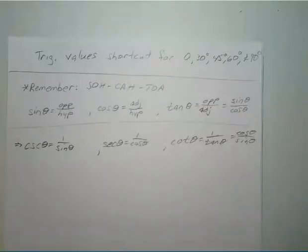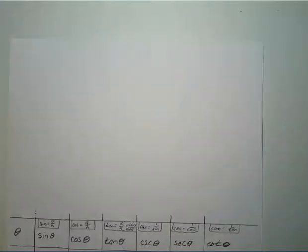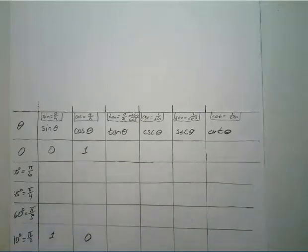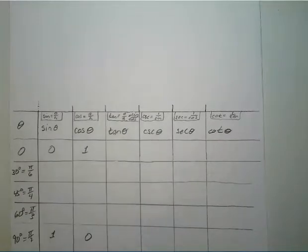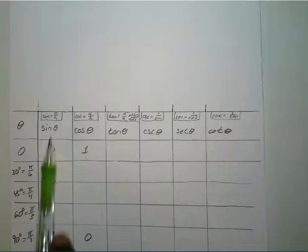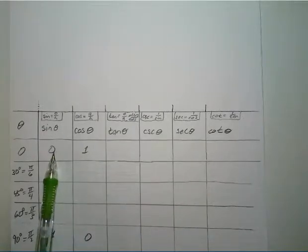Feel free to press pause if you're still writing this, but we're going to go ahead and move on to the actual shortcut. As you can see I've partially filled out the chart with sine, cosine, and so on. Starting off, just know that sine of zero is equal to zero and cosine of zero is equal to one.